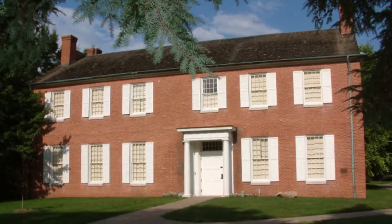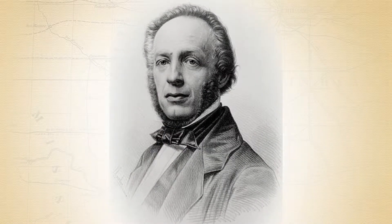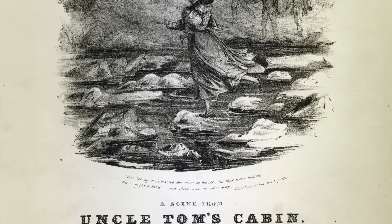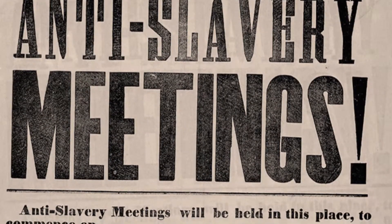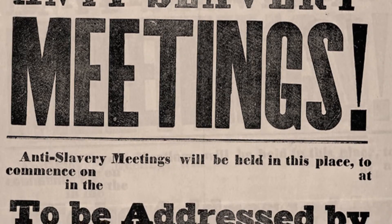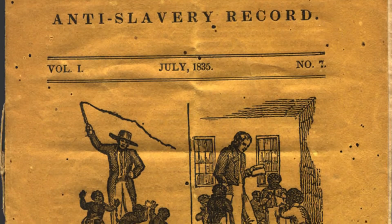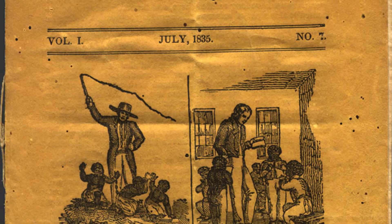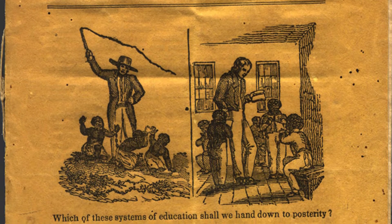Illinois College in Jacksonville was a center of the abolitionist movement in Illinois. President Edward Beecher, brother of Harriet Beecher Stowe, author of Uncle Tom's Cabin, was an outspoken opponent of slavery who helped organize the Illinois State Anti-Slavery Society in 1837. Professor Jonathan Turner helped three Black women to freedom. Student Samuel Willard was prosecuted and fined for attempting to free an escaped slave, and other students were indicted for harboring runaway slaves. Two houses near the college are believed to have been part of the Underground Railroad.